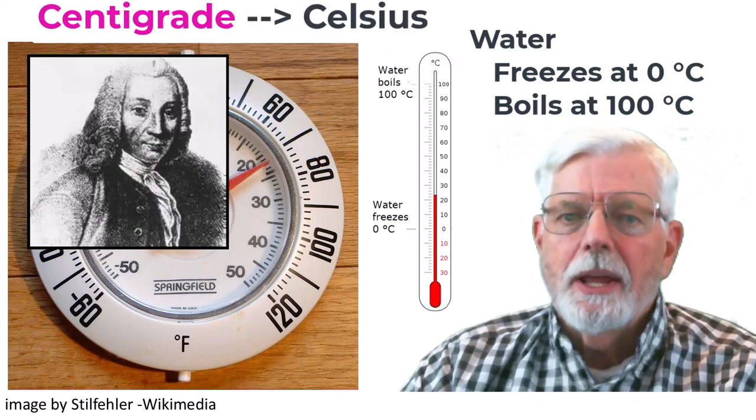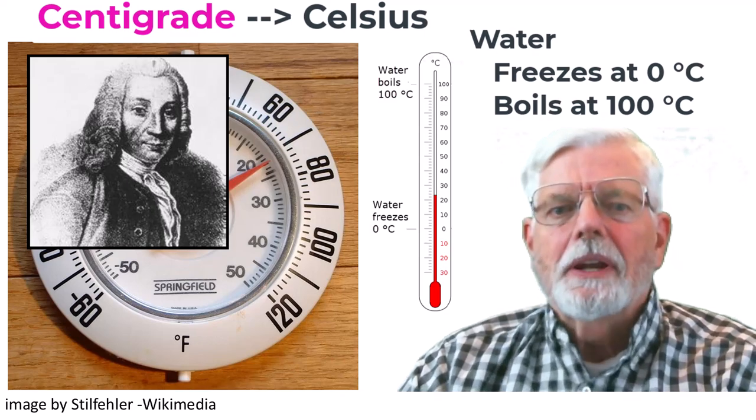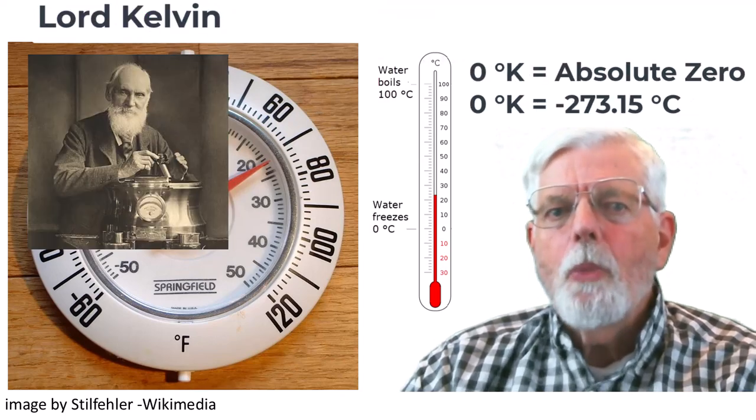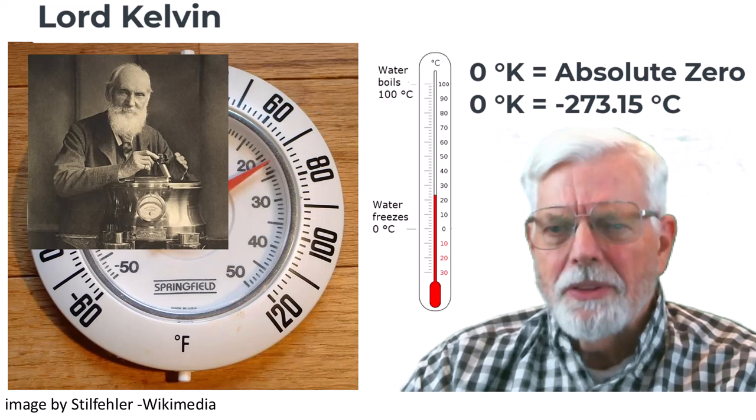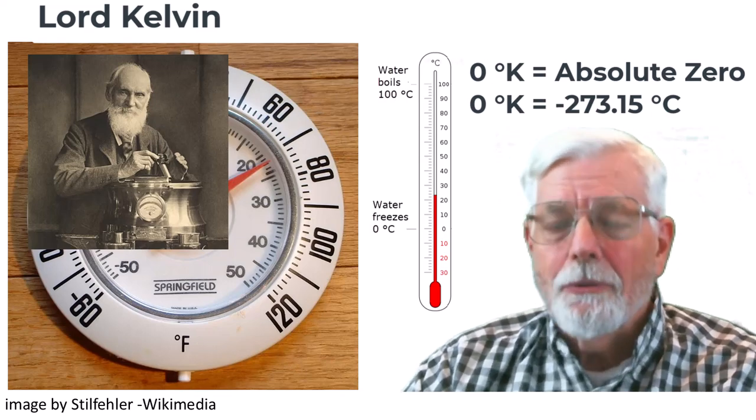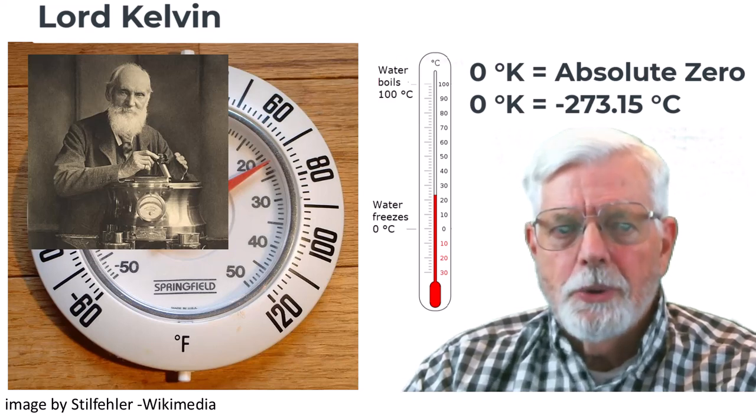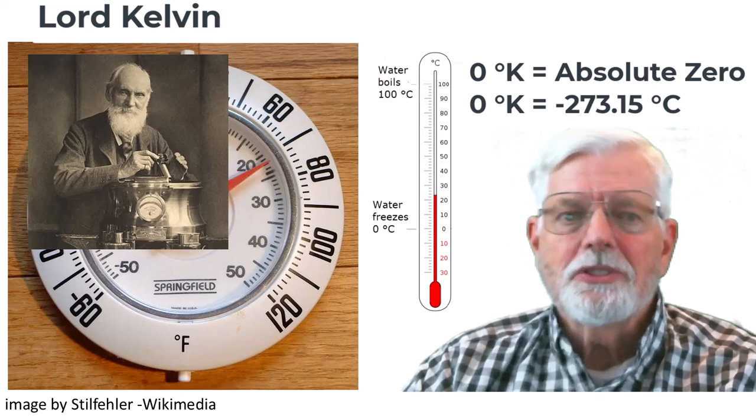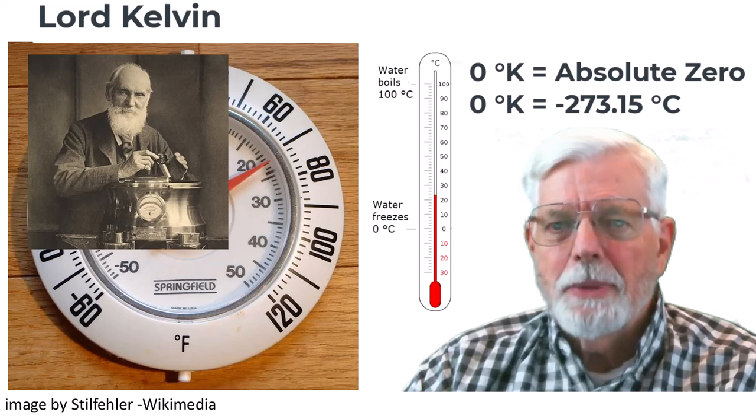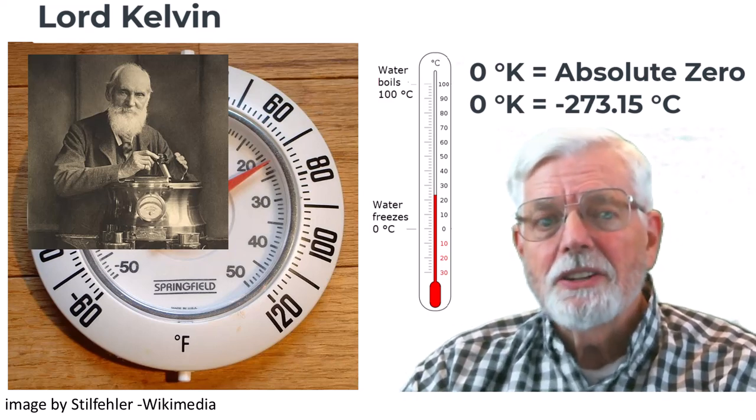Since Fahrenheit was named after a person, it would be nice to name centigrade after a person whose name started with C. Centigrade is now known as Celsius, named after the Swedish scientist Anders Celsius. One more way of describing temperature is the Kelvin method, which defines zero degrees K as absolute zero to represent the total absence of thermal energy. Kelvin is similar to Celsius, except for the definition of absolute zero. Zero degrees K is actually negative 273.15 degrees Celsius. The Scottish Irish physicist and mathematician William Thompson is better known as Lord Kelvin and was one of the most eminent scientists of the 19th century.